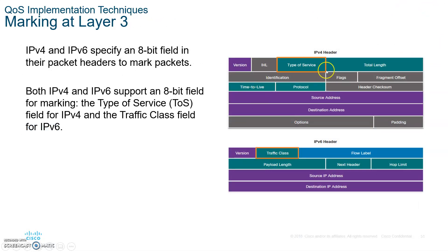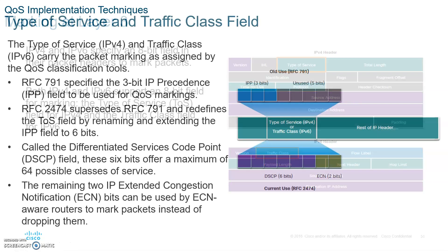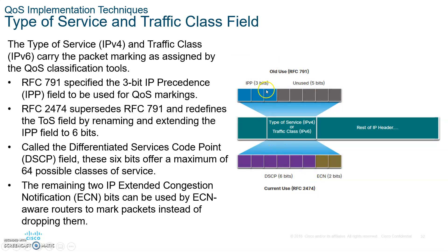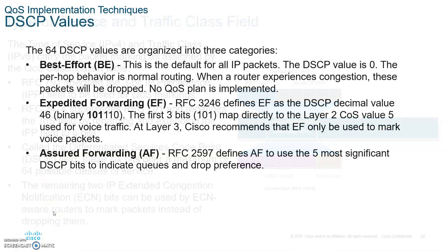At layer 3, the marking is called the type of service field. In IPv6, it's called traffic class. On the IP packet, if using IP Precedence, you use three bits of precedence and then five bits are unused. IP Precedence is not used as much because you're only using three bits. If you're using DSCP — differentiated services — you use six bits for the DSCP code point and two bits for ECN. Please write that down for differentiated services.